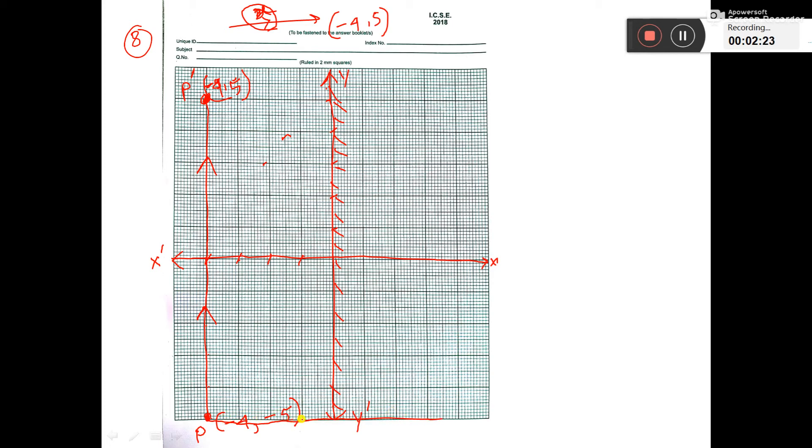1, 2, 3, 4. So here also 1, 2, 3, 4. Up to here it will come. Now find the coordinate. You see, here it is minus 4 comma minus 5.